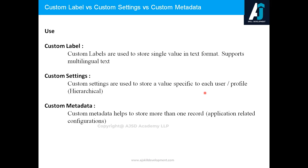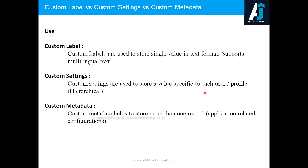The first comparison is in the aspect of usage or usability — where you will be using custom label, custom settings, and custom metadata. Custom label is generally used to avoid hard-coding a single value. If you want to store a single value and avoid hard-coding in formulas, validation rules, or Apex, then custom label is the right choice.